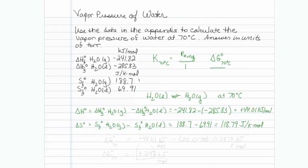Now to get the free energy at 70 degrees Celsius, I'm going to take my delta H, which is plus 44.01 kilojoules per mole minus T, and I'm trying to do this at 70 degrees, so this would be 273.15 plus 70 times delta S, which I will make sure I have in units of kilojoules per Kelvin mole. So that would be 0.11879 kilojoules per Kelvin mole.